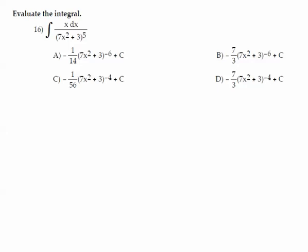If we take the derivative of the inside function, that would be 14x, and that is a constant multiple of the x in the numerator, so this is going to work. So we let u be equal to 7x squared plus 3. Du then would be 14x dx.